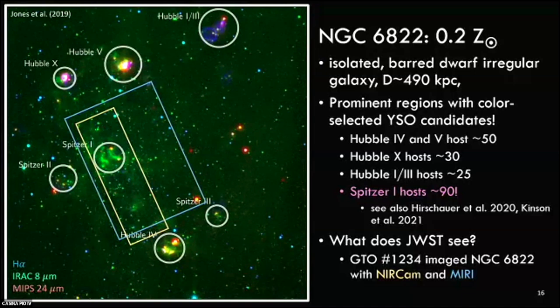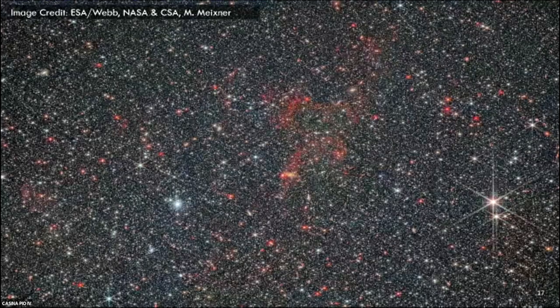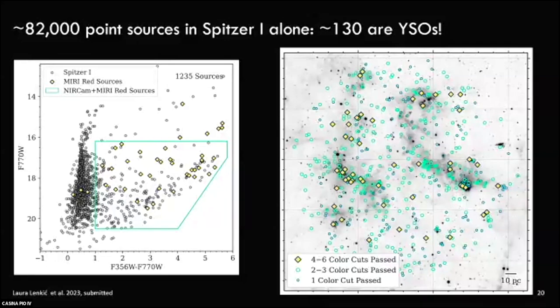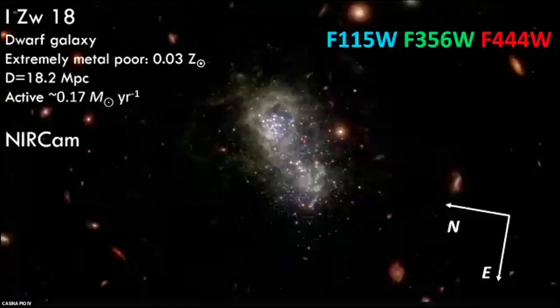Moving on to NGC 6822 at 20% solar metallicity — this galaxy is further away but we capture more of it. Prior Spitzer observations identified a number of young stellar objects in these regions. We sampled the center to study the largest number of stellar populations. The NIRCam image is basically a star field. In MIRI, you pick up all the diffuse emission plus the embedded sources, so this study required the MIRI data to even find the young stellar objects. We find 130 YSOs in the region, slightly lower mass than those estimated with Spitzer because JWST resolves previously blended sources.